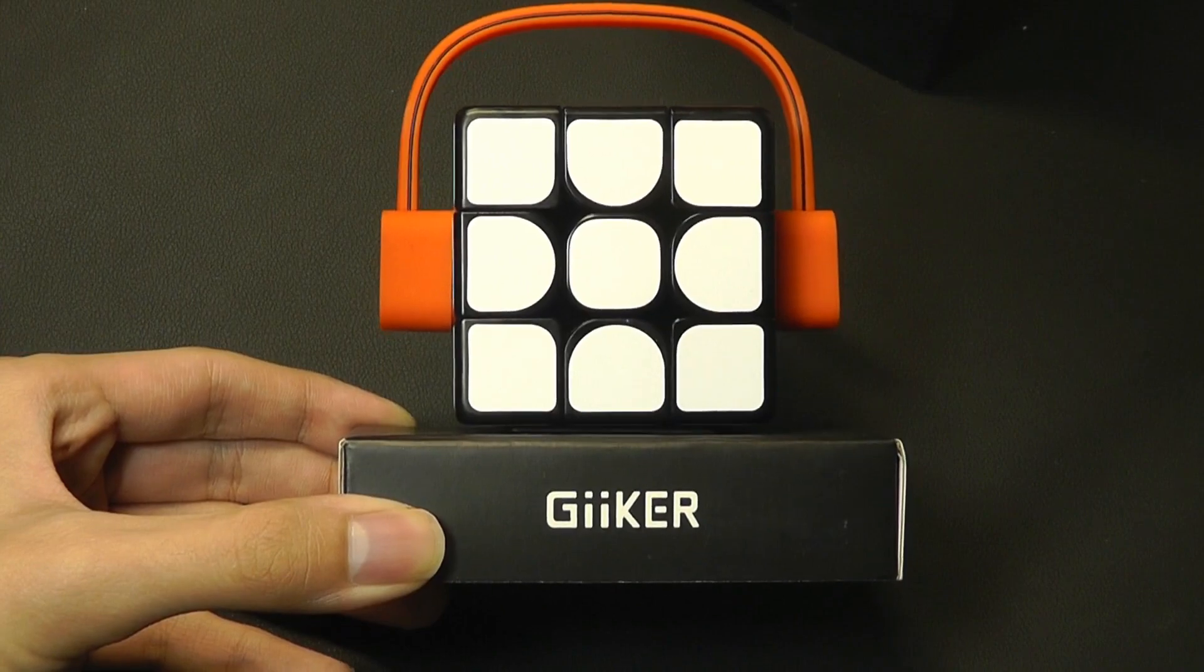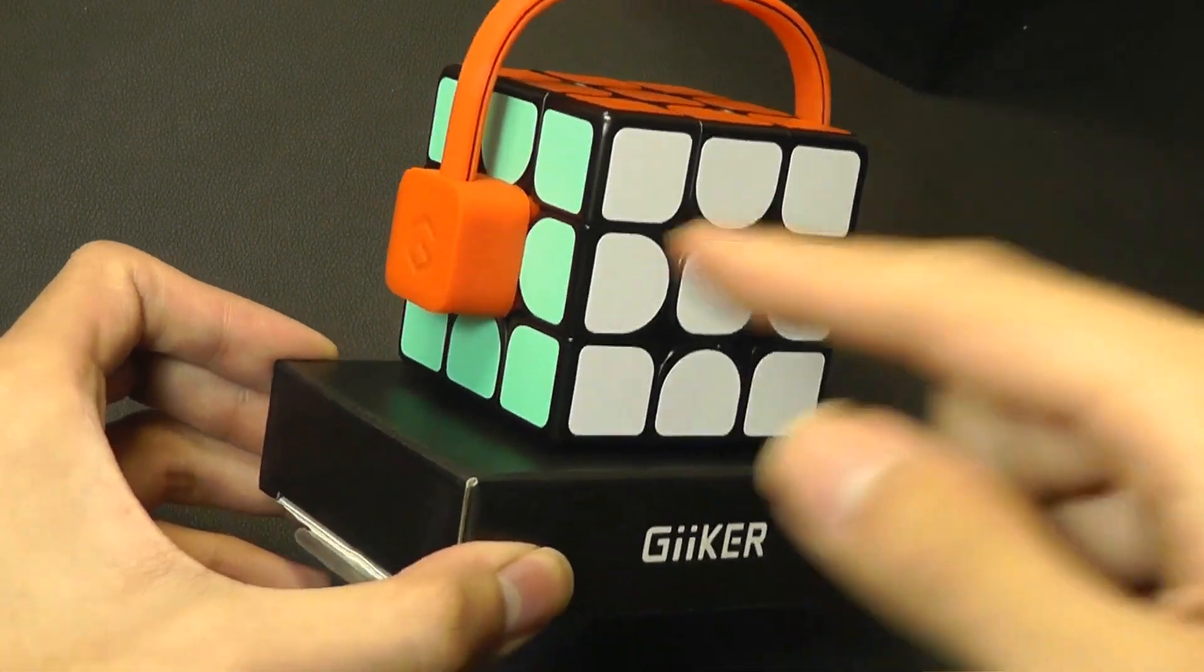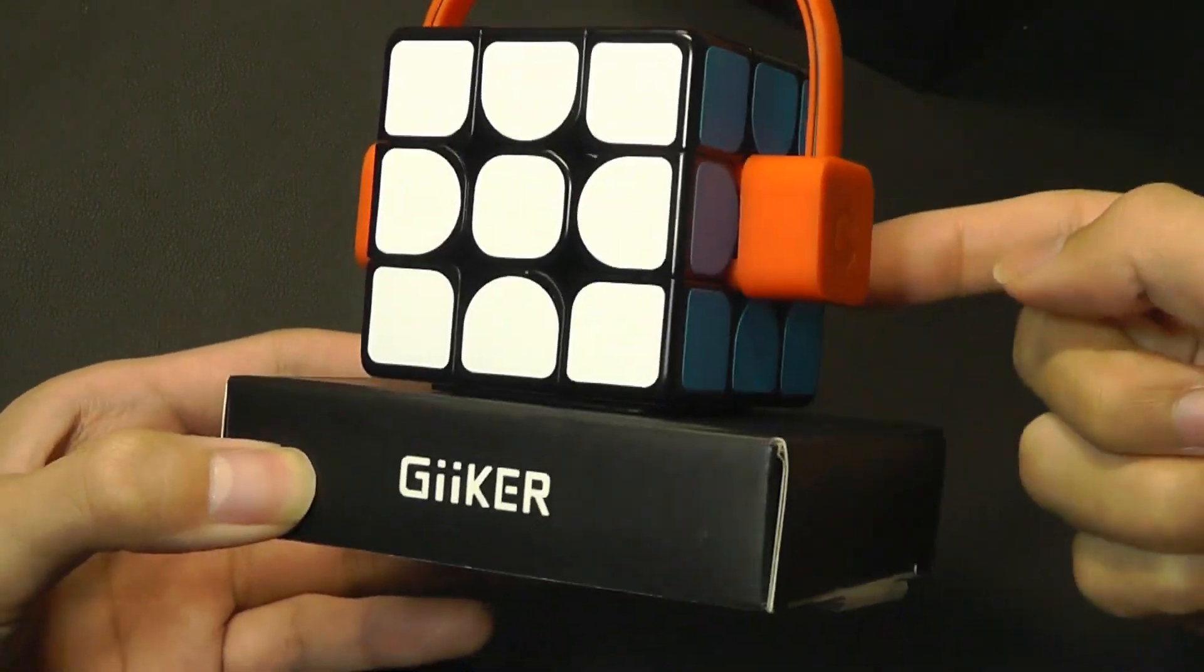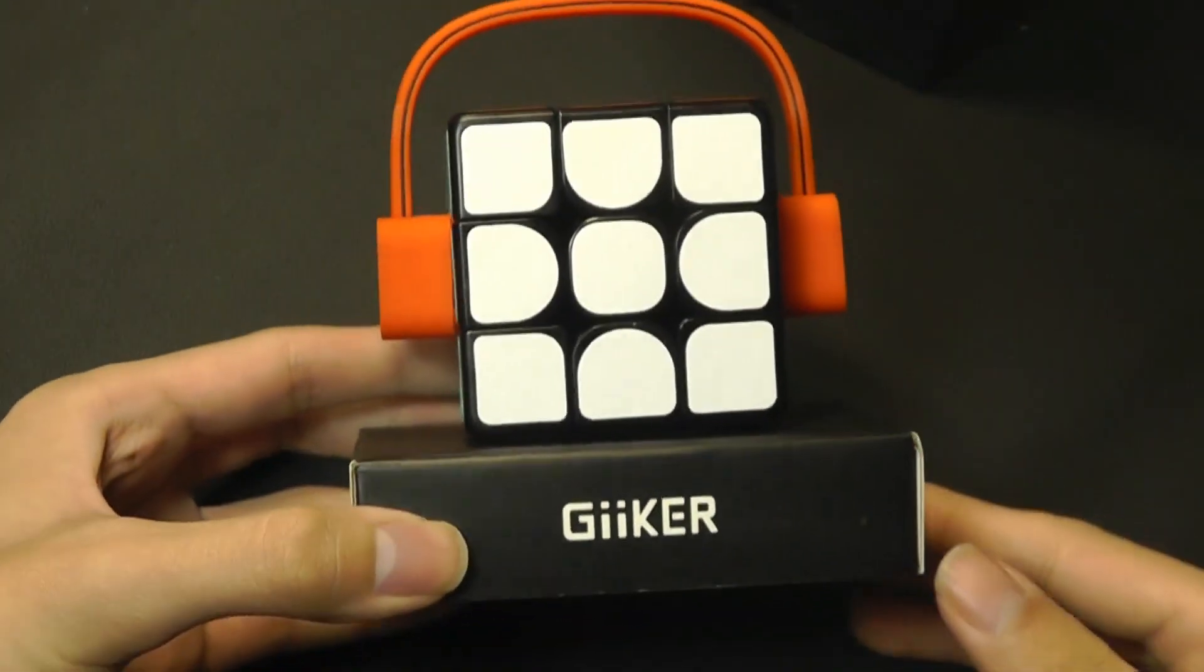It almost looks like the Rubik's Cube is wearing headphones, but really, this is the charging mechanism. There are two pins that you stick it into for the center points, and then you have a micro-USB port on the bottom there just to plug it into a standard charger.